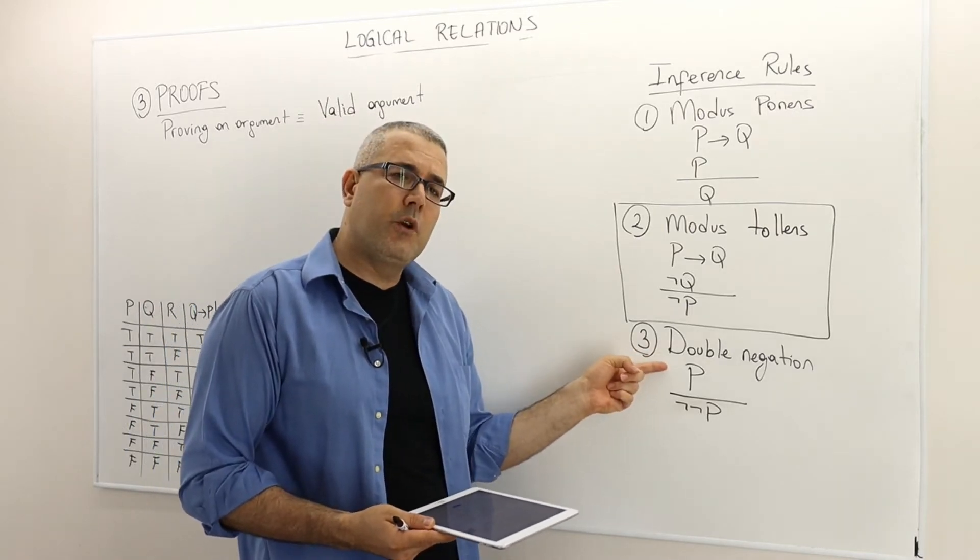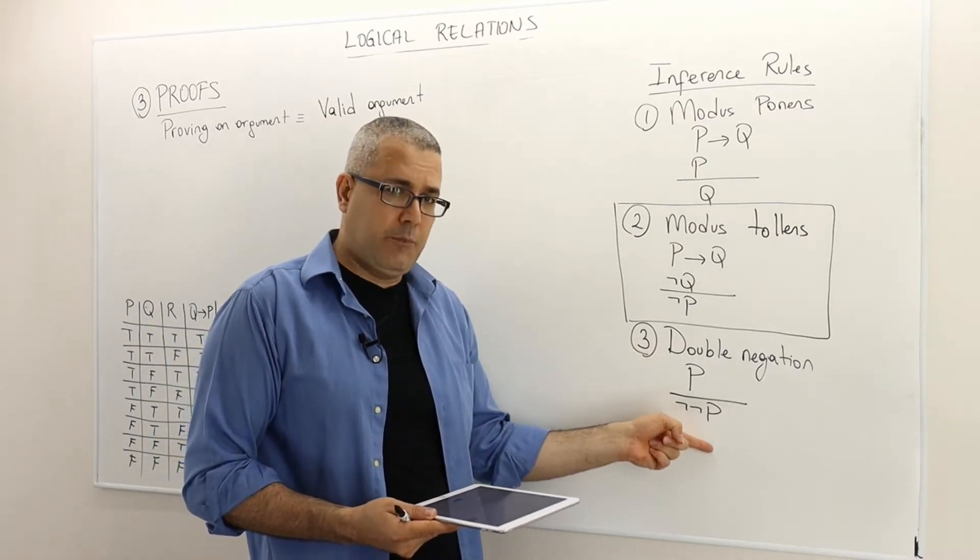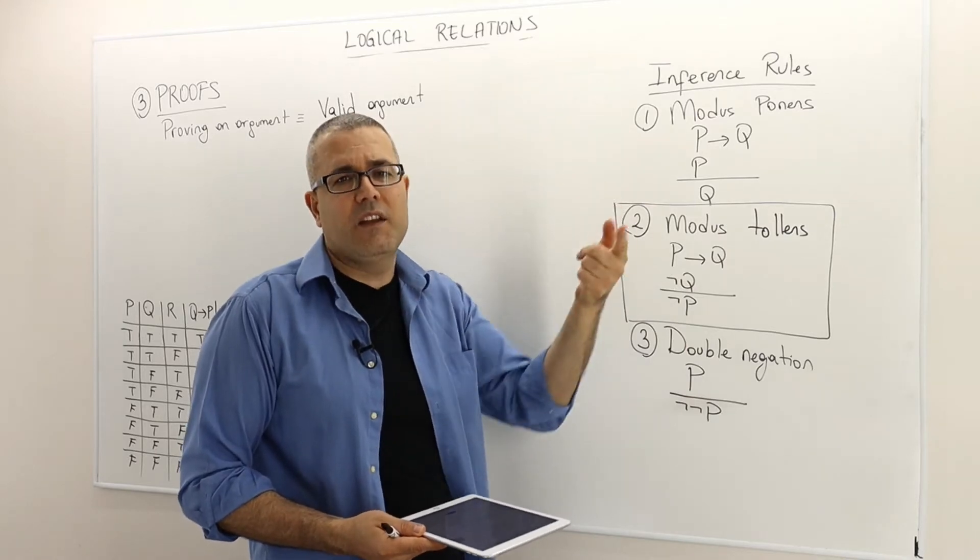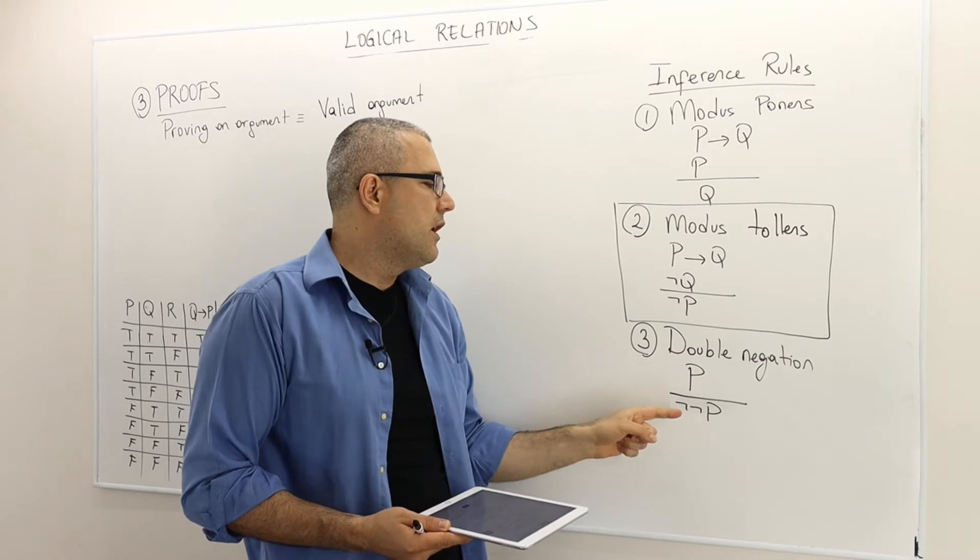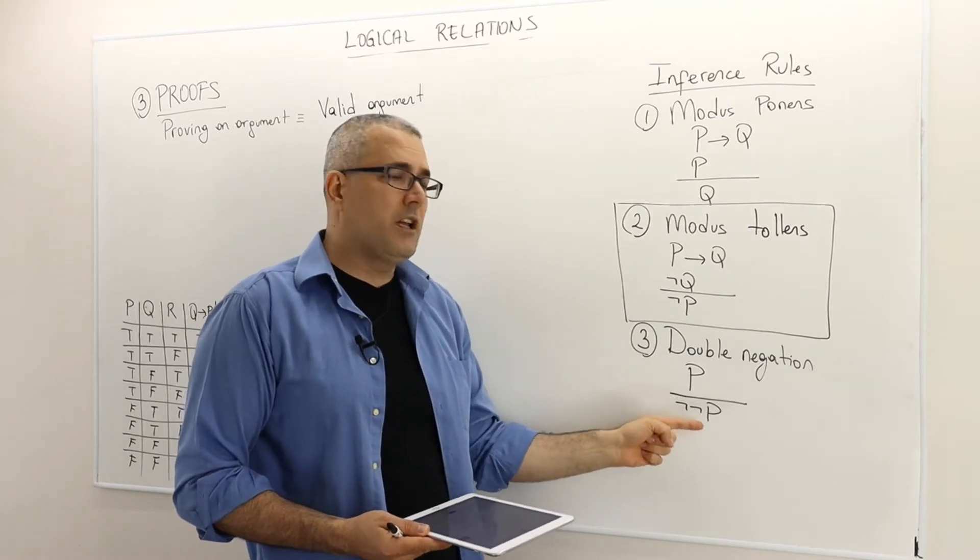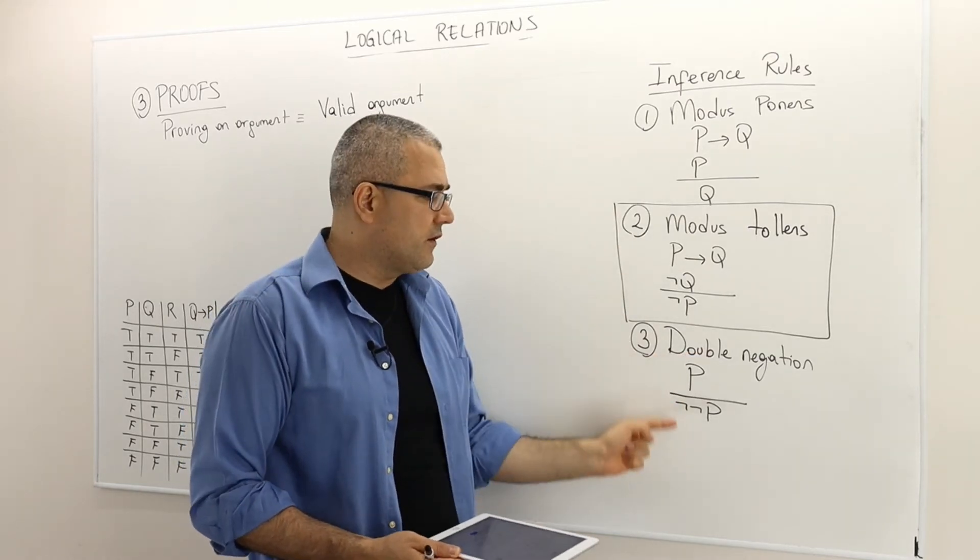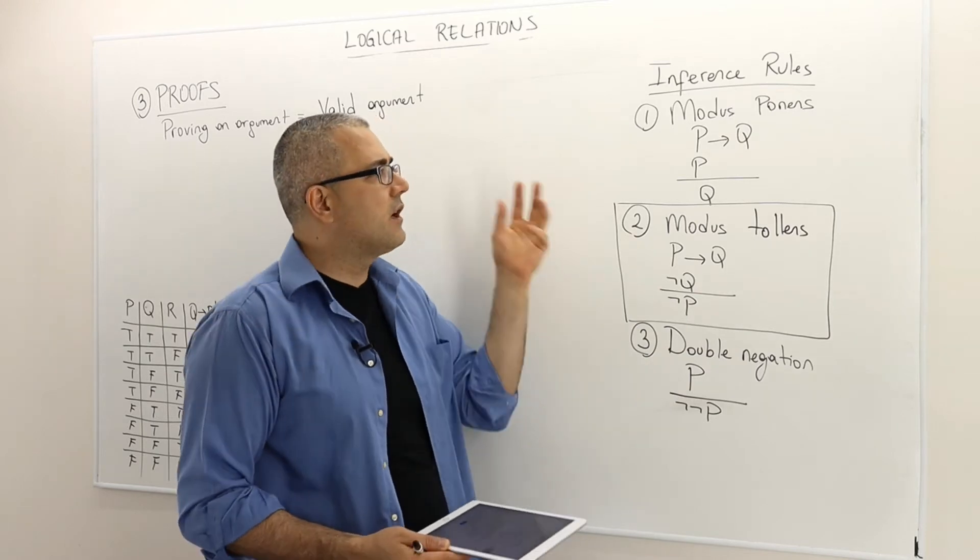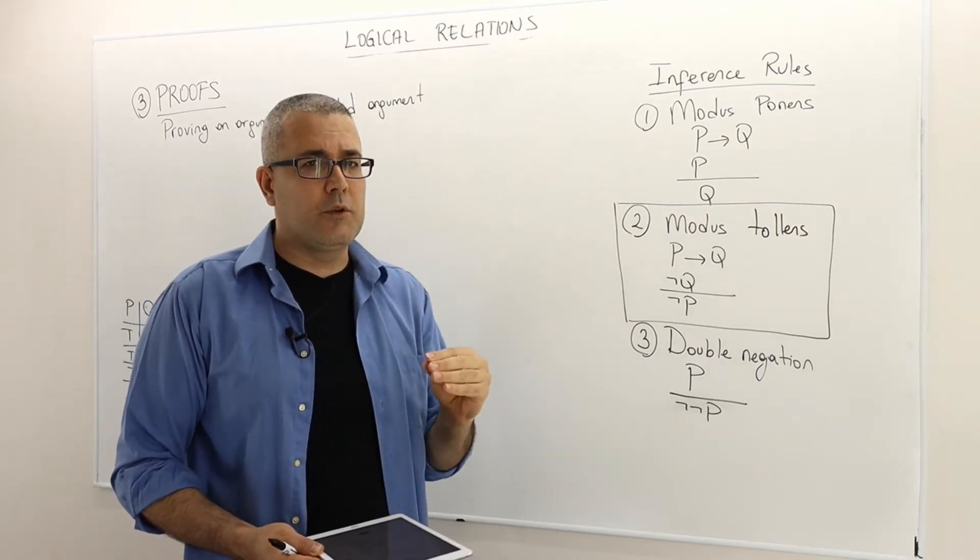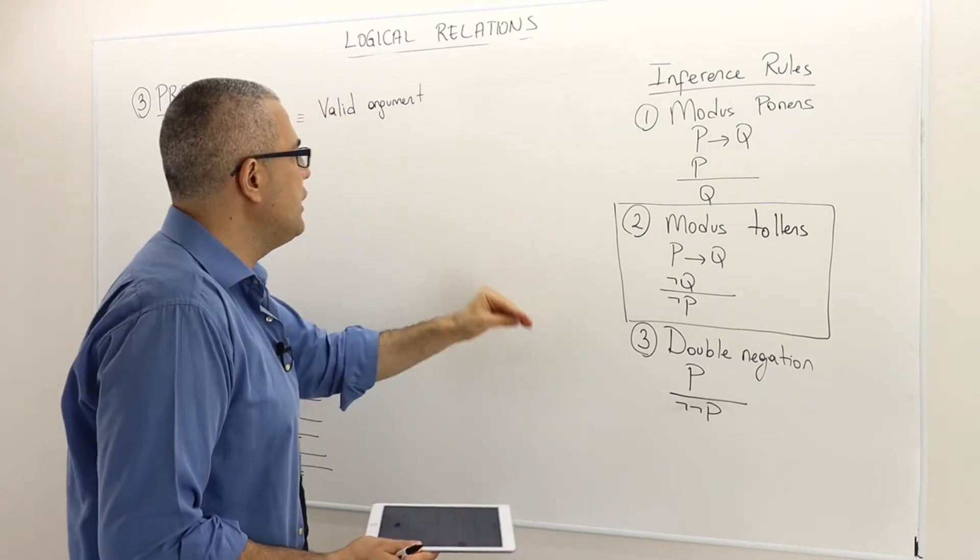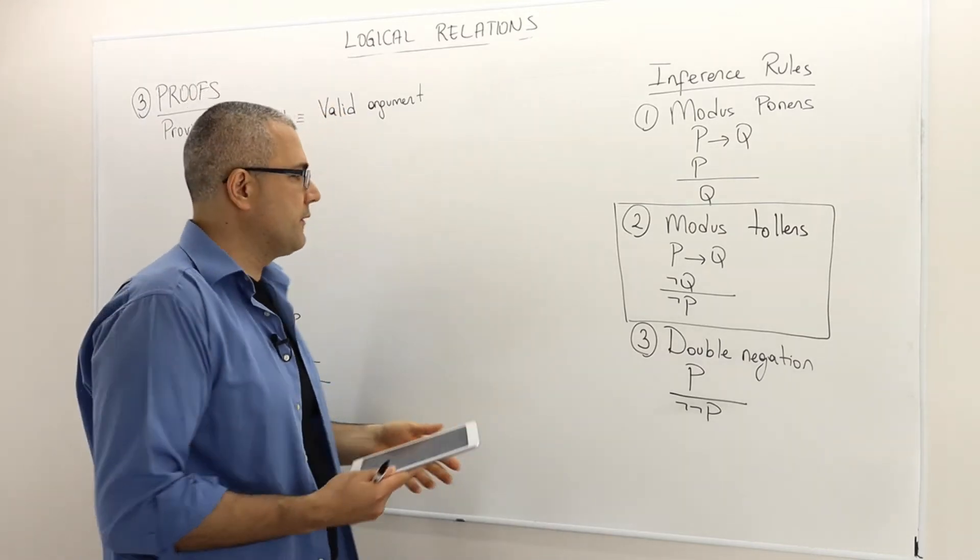And then the third one is the double negation. If P is true, then not not P, so I'm basically double negating the sentence, so that not not cancels each out. So if P is true, not not P must be true. So this is also a valid argument. These are three very short valid arguments where we can use to prove more complicated arguments.